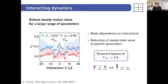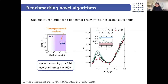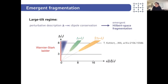We can follow this dip and indeed see resonant behavior when scanning the tilt energy — the dip appears at exactly this resonant feature. The trace shown earlier at U equals 5J is very close to this resonant feature — where we expected the fastest dynamics — and yet it appears extremely stable and robust. We performed a lot of numerics to better understand what is happening in this regime.